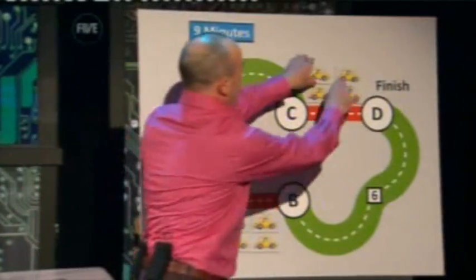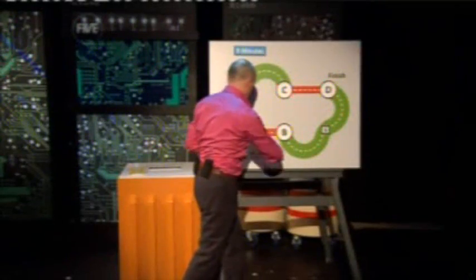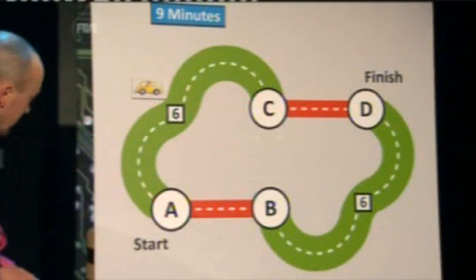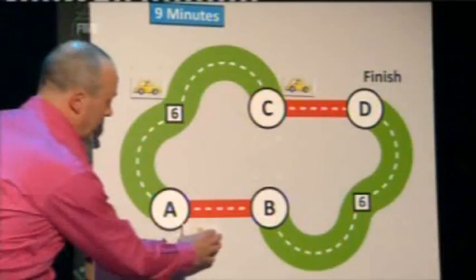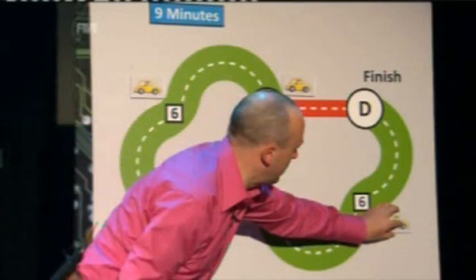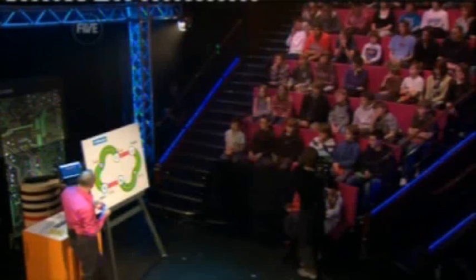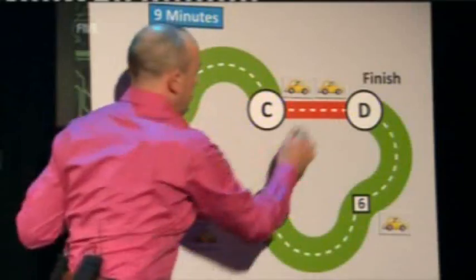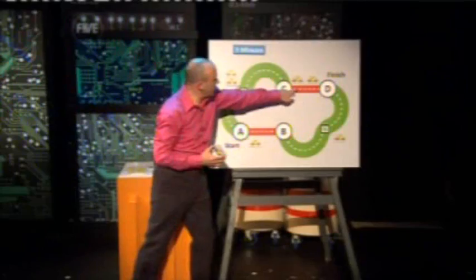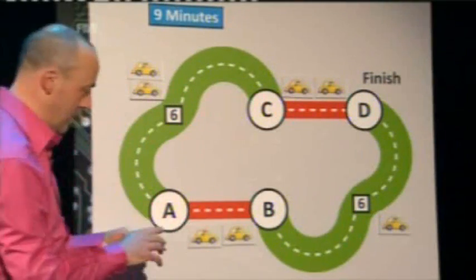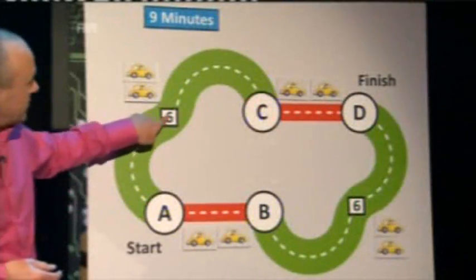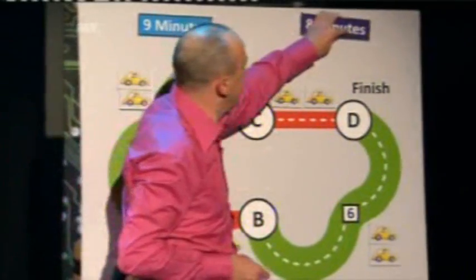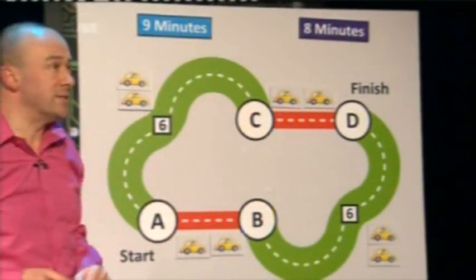Let's see what happens if we remove the yellow road from our road network. Now there are only two routes from A to D. The first car goes along the top; the second avoids congestion and takes the bottom route. The third car goes along the top, and the fourth takes the bottom route again. How long does it take? Each driver travels six minutes along the green road plus two minutes along the red road — eight minutes total. That's less time than when the yellow road was present.